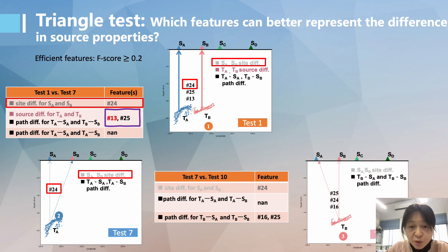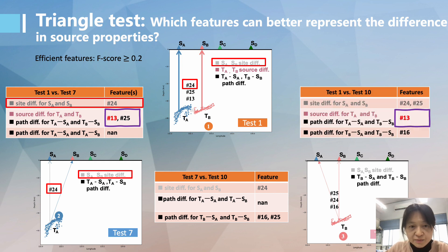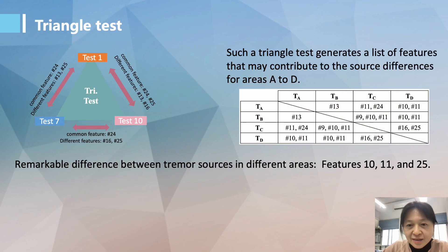And similarly, we can work on other pairs of signals. This is called triangle test, which allows us to generate a list of features that may contribute to the source differences between different areas.